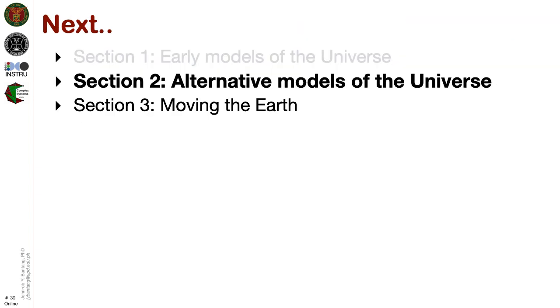We have just finished the first of the three sections of Module 2. In the next section, Section 2, we will discuss the alternative models such as the Copernican and the Tychonic models. You are required to take a short quiz for this section, and your faculty in charge will provide you the link. Thank you very much.